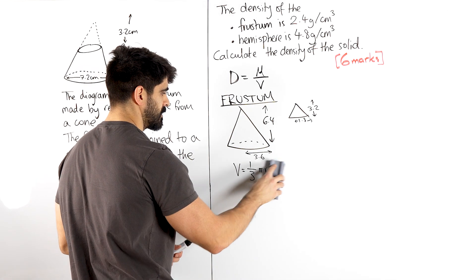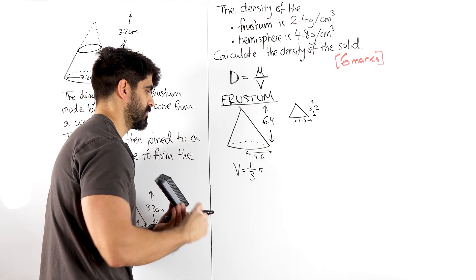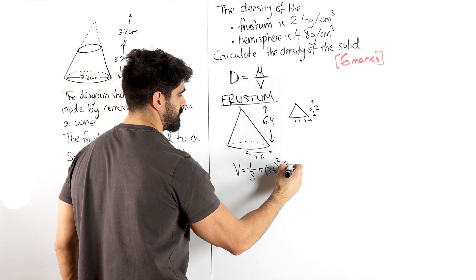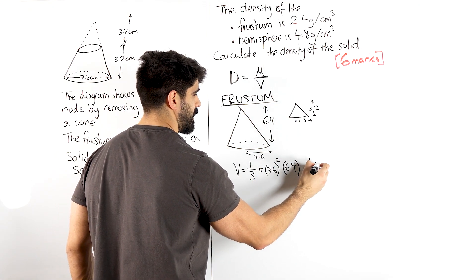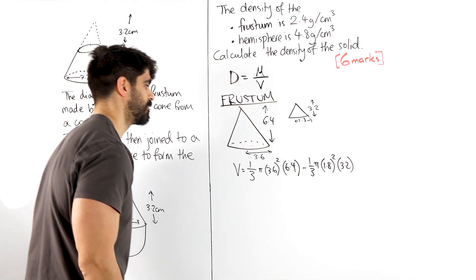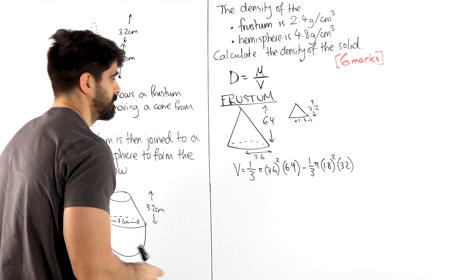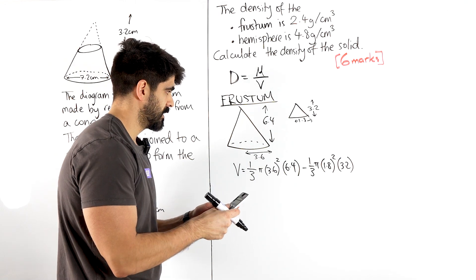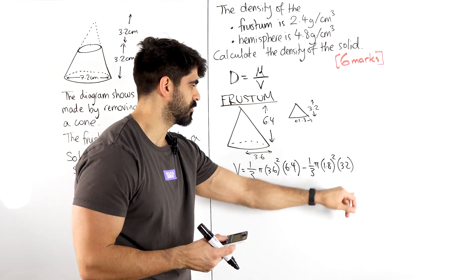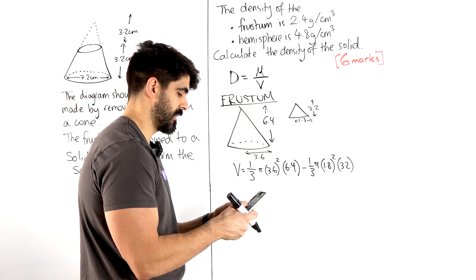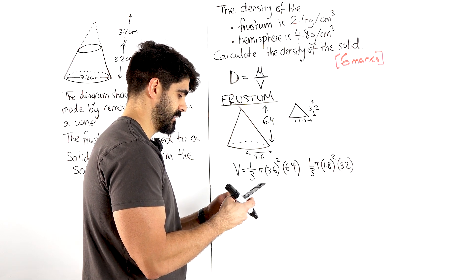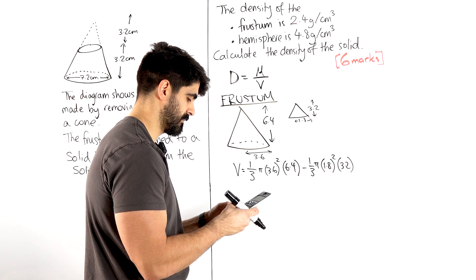I'm going to start subbing things in. So you have one third pi, the radius being 3.6 squared times the height of 6.4. I'm going to subtract one third pi, the radius being 1.8 squared times the height 3.2. The quicker way to type this is you do one third pi then bracket all of this minus all of this. So what I'm going to type in is one third pi then a bracket, another bracket, 3.6 squared times 6.4 minus 1.8 squared times 3.2.